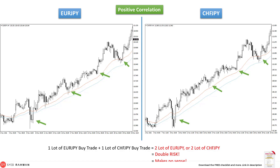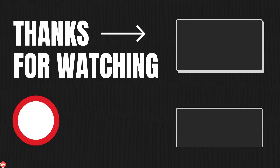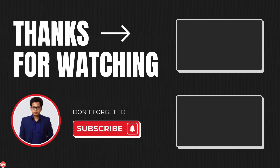In a later lecture, I will show you how to choose a profitable currency pair from these types of positively correlated pairs, since not every currency pair moves for the same amount of pips at the same time, and not every currency pair is profitable to trade. So that is all for now. Hope you enjoyed the lecture. We'll see you in the next class. Till then, have a nice day and goodbye.